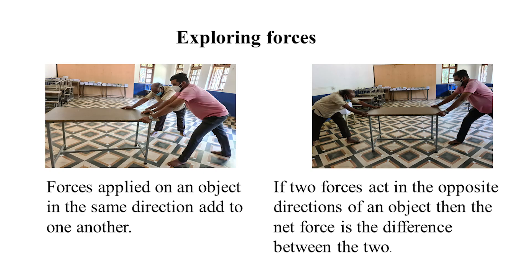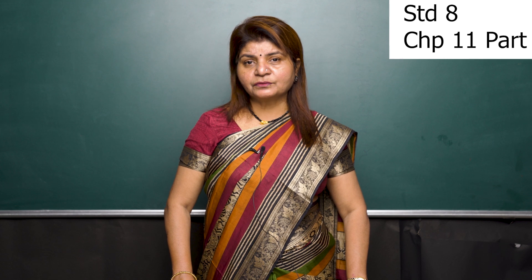Interaction of two objects results in a force between them. In one picture, a table is being pushed by two friends in the same direction. In another picture, a bench is being pushed by two friends in the opposite direction. We can conclude that if two forces act in opposite directions, the net force is the difference between the two.